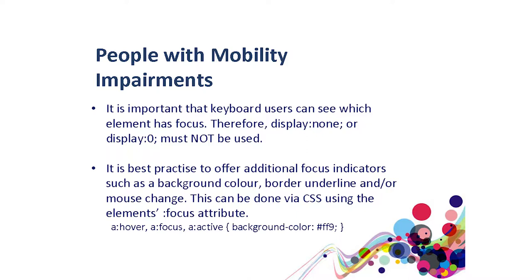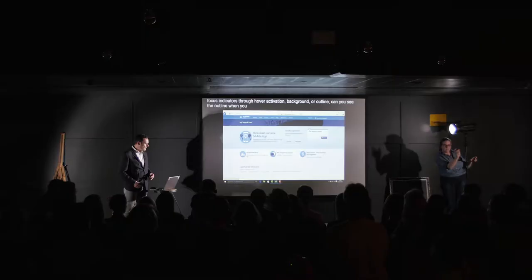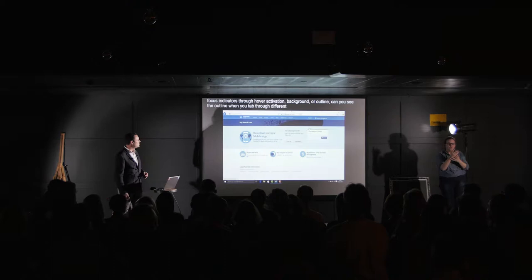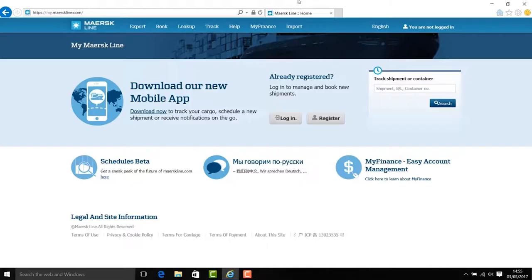For mobility impaired users, watch out for focus issues. Don't use 'display:none' as that hides elements from keyboard users and prevents tabbing to different elements on screen. Provide additional focus indicators through hover, active, and focus states — using a background or an outline, possibly two pixels thick — so users can see the outline when they tab through elements. You also need to make sure you drive the page to different states, ensuring keyboard users get the same experience as mouse users.